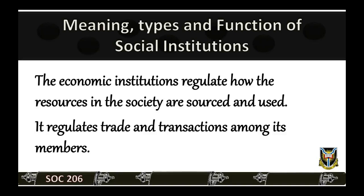Do you think that social institutions vary from country to country and from place to place? In one sentence, support your answer. Yes, social institutions vary from country to country and from place to place because the needs and factors peculiar to each society dictate the institutions that will be formed.